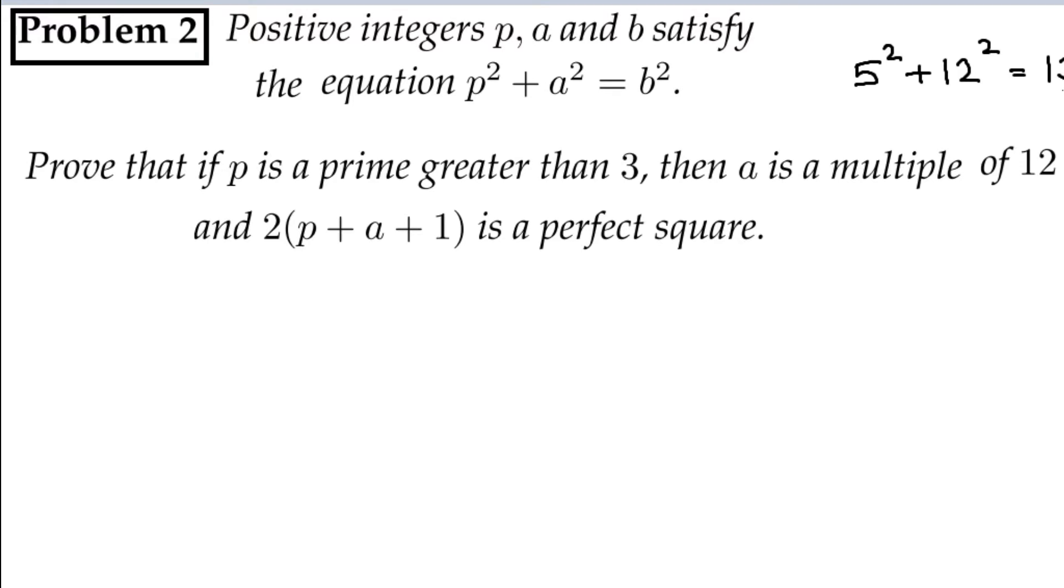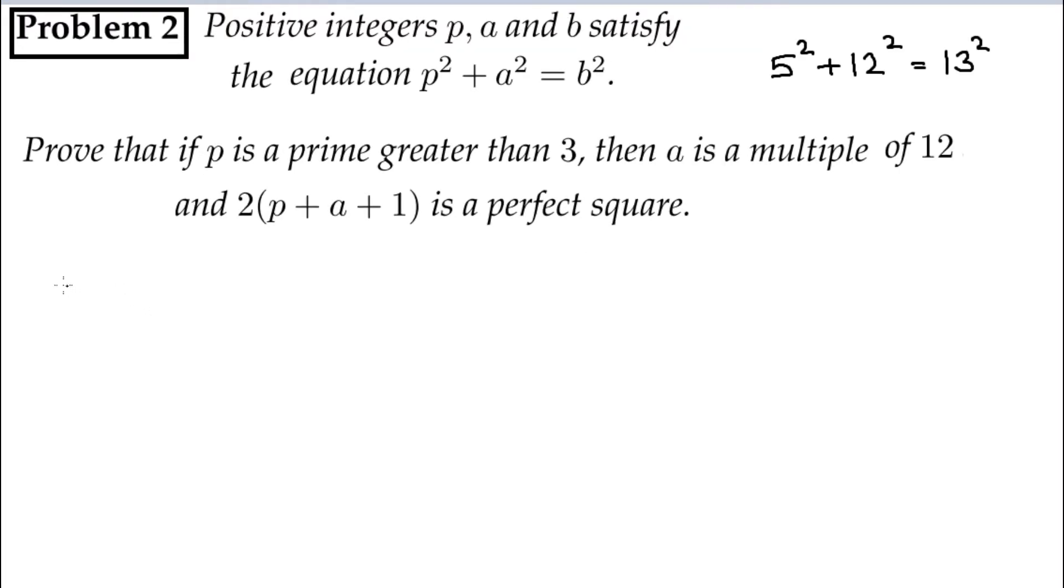But that's not a proving part. When you are proving something, you need to make it generalized for all the things. So let's start the solution. The solution here is very clean. You have P square plus A square equals B square. What I suggest you is P is a prime. Utilize this prime thing. So how to utilize this? Let's keep it one side and bring the A square this side.